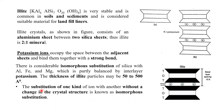You should know what isomorphous substitution means: the substitution of one kind of ion with another without a change in crystal structure. In illite, there is considerable isomorphous substitution of silica, aluminum, iron, and magnesium, partly balanced by interlayer potassium. One stack thickness is 10 angstroms, and the overall thickness may vary from 50 to 500 angstroms.